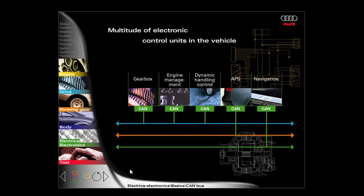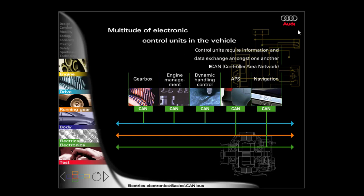Modern motor vehicles are equipped with a multitude of electronic control units. These include, for example, the engine management system, the gearbox control system and the control system for all safety and convenience electronics. These control units require lively information and data exchange between one another. If all of the units were connected with cables, this would lead to enormous wiring complexity in the vehicle. For this reason, all control units are connected to a CAN bus.